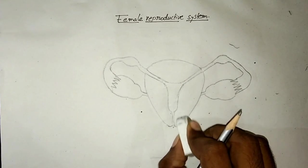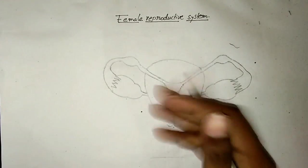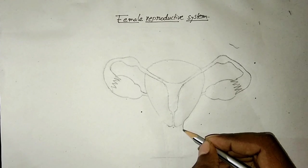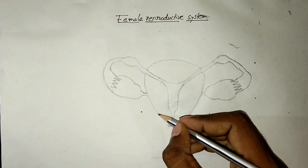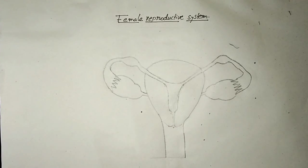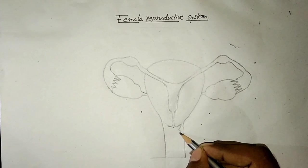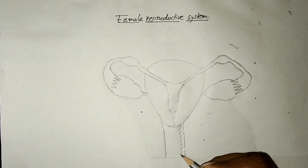Now I am going to draw the vagina. I slightly erase on both sides. I extend the outer border of the uterus towards the bottom, and I repeat the same thing on the other side. Now I draw a folded line with a lot of bends. This is going to form the inner surface of the vagina, which is also called the birth canal.